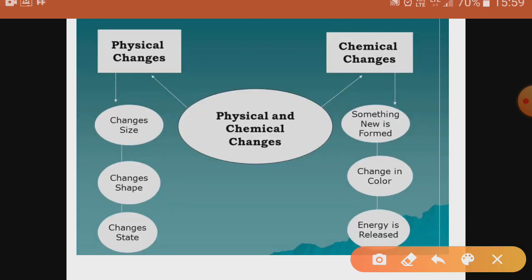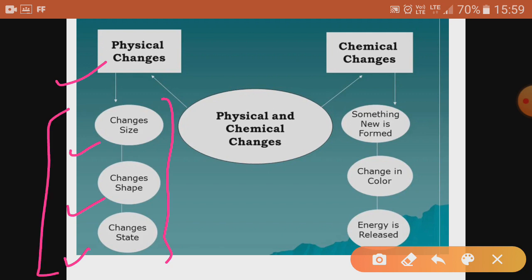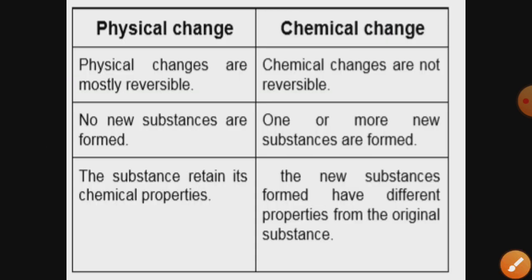In this slide it is clearly shown that in physical change there is change in size, shape, and state — these are physical properties. If there is a change in chemical property, new substances may form, there may be a change in color, or release of energy or use of energy — it all depends on the type of chemical change. These are all changes in chemical property.